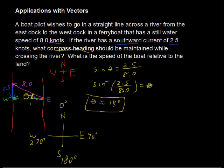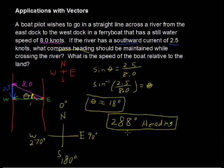So if directly west would be 270 degrees, and we're going an additional 18 degrees, then the compass heading would be 288 degrees compass heading. Okay, so that is our answer, 288 degrees.